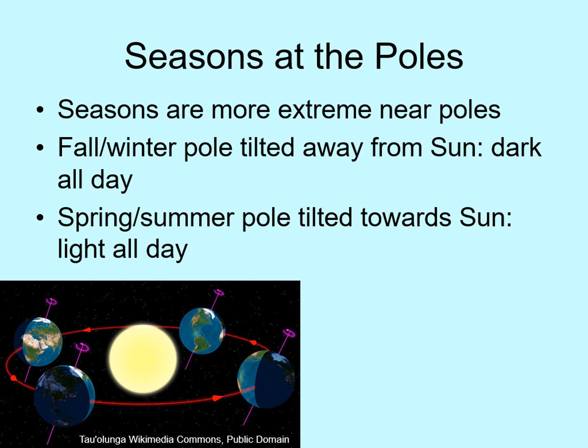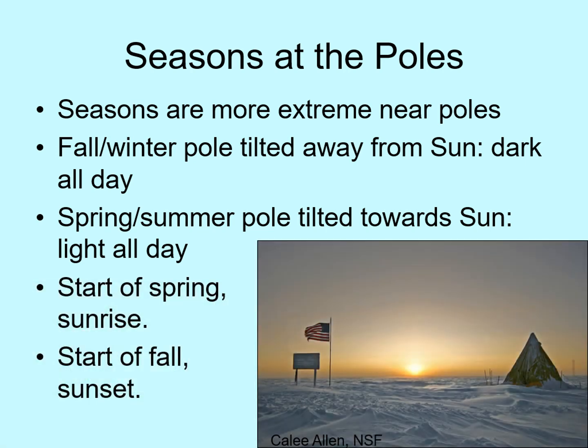Instead, the Sun just circles around the sky, just like the stars do. At the start of spring, the Sun pokes above the horizon for the first time in six months. This picture was taken at the Amundsen-Scott Research Station at the South Pole. Since it's in the Southern Hemisphere, spring comes in September, not March. People here are stuck at the station all winter long — there is no way to get in or out. So when they see the Sun come up in September, they have quite a celebration.